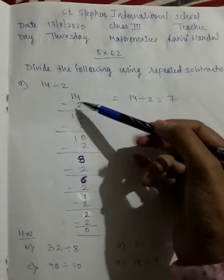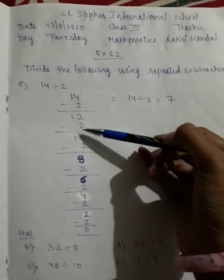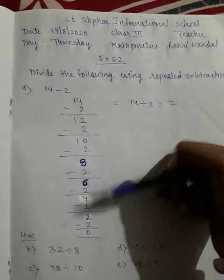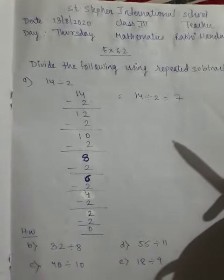So how many times do we do? 1, 2, 3, 4, 5, 6, 7. Means your answer is correct.